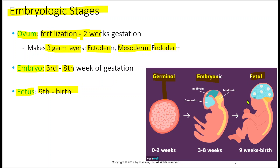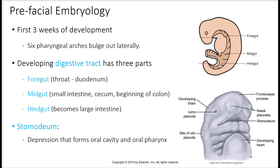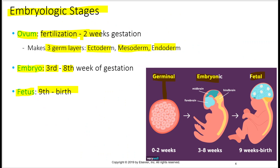In the fetal stage you can actually recognize a human being more clearly. Interestingly, if you look at the embryonic stage, different animals — human, rabbit, calf, and hog — all look the same. That's why we call it a fetus when it gets to that later level.